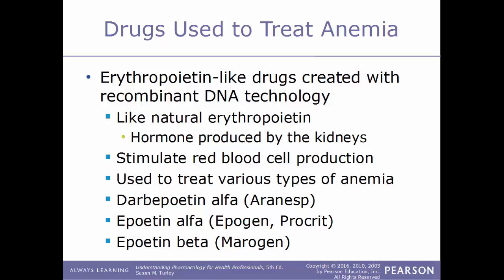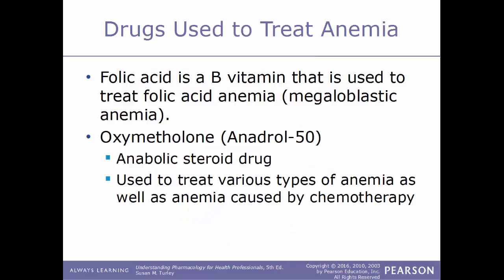Erythropoietin-like drugs are very similar to natural erythropoietin, a hormone produced by the kidneys that controls how many red blood cells are produced. Examples include darbepoetin alfa, also known as Aranesp; epoetin alfa, also known as Epogen or Procrit; and epoetin beta, also known as Mircera. Folic acid is a B vitamin used to treat folic acid anemia, also known as megaloblastic anemia. Oxymetholone, also known as Anadrol-50, is an anabolic steroid drug used to treat various types of anemia including anemia caused by chemotherapy.